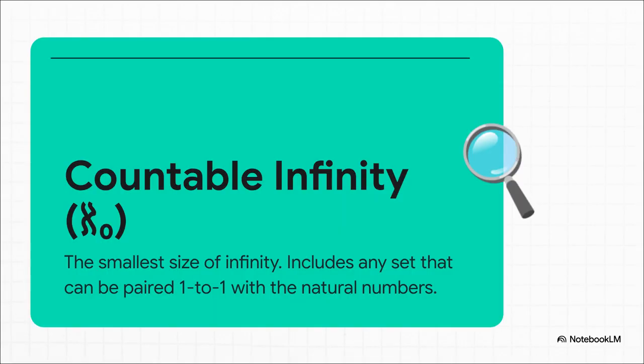So this first size of infinity, which includes all the whole numbers, the even numbers, odd numbers, even all the fractions, it got a special name. Countable infinity, or aleph not. For a long time, this was kind of the baseline, you know? The smallest possible flavor of infinity.